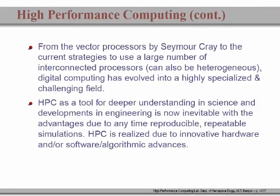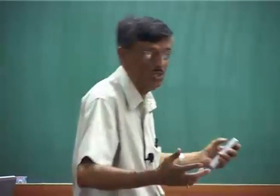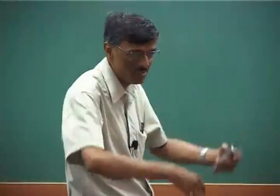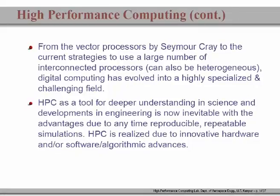Right now, we have machines using very large numbers of interconnected processors — and these processors need not be homogeneous; they could be heterogeneous. You could have a room filled with different types of PCs put together in a cluster to derive enhanced power. All of this originated in vector processing, and the current activity is what we call parallel computing.